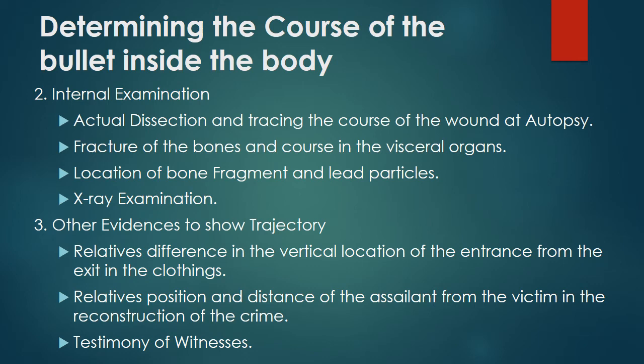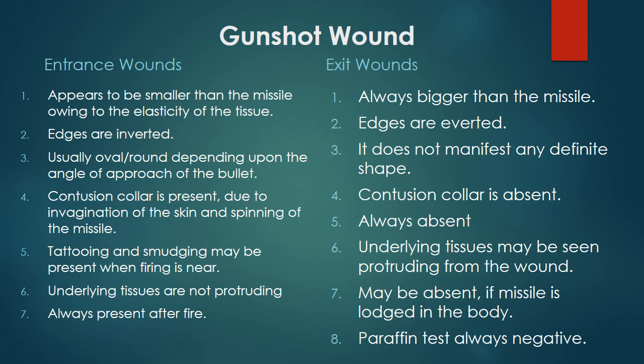Internal examination: actual dissection and tracing the course of the wound at autopsy, fractures of the bones and course through visceral organs, location of bone fragments and bullet particles, and X-ray examination. Other evidence to show trajectory includes the relative difference in vertical location of the entrance from the exit in the clothing, the relative position and distance of the assailant from the victim in reconstruction of the crime, and testimony of witnesses.